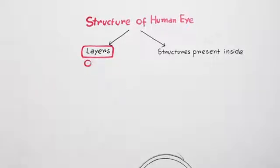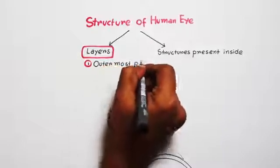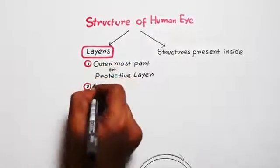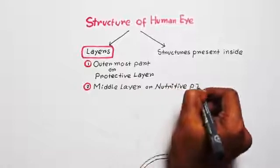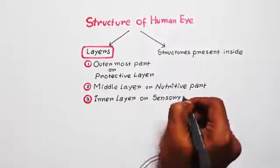Basically it has three layers: outermost part or protective layer, middle layer or nutritive part which provides nutrition, and inner layer or sensory pigmented part.